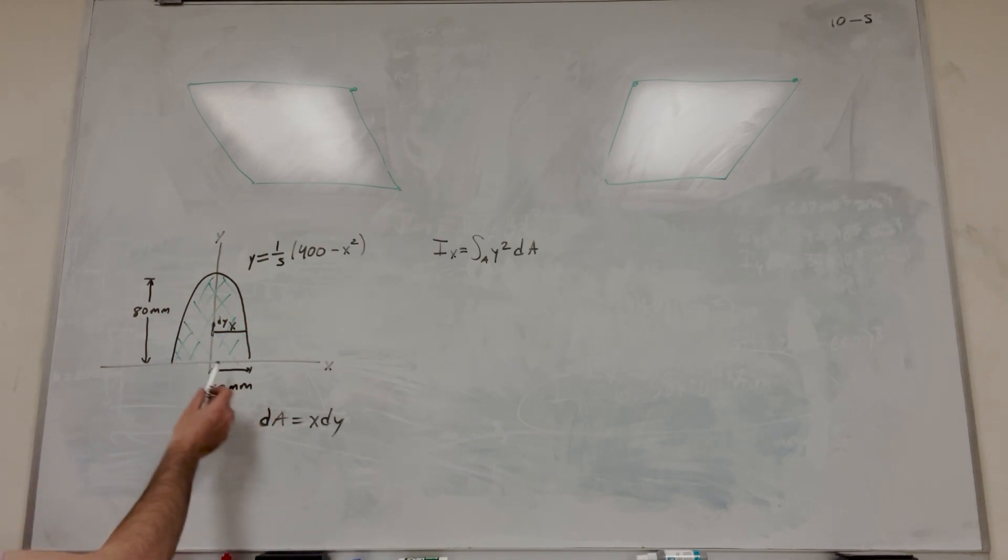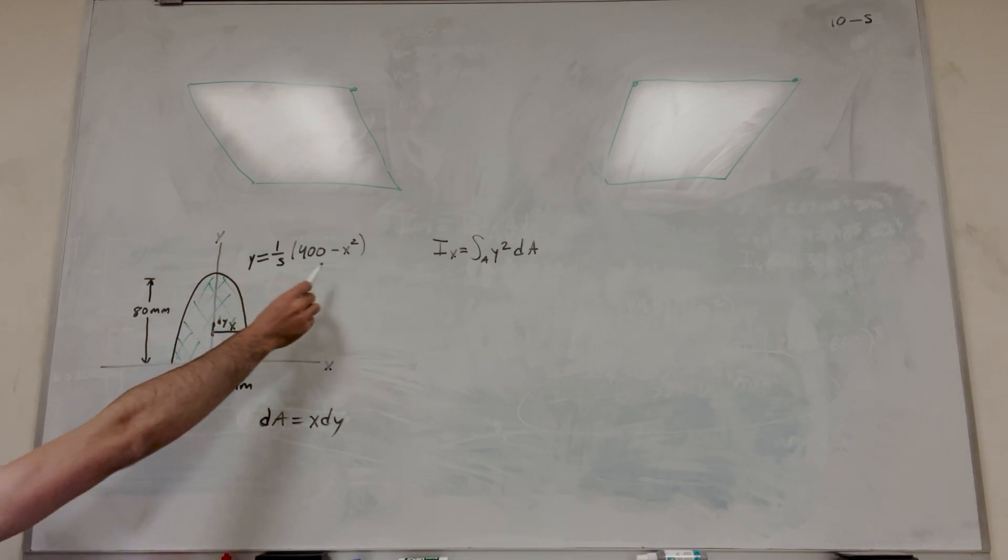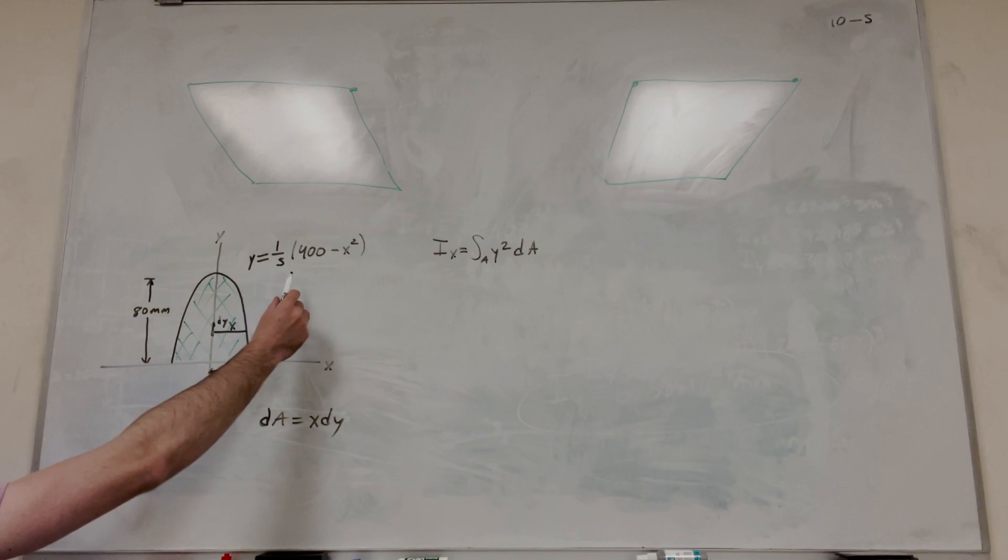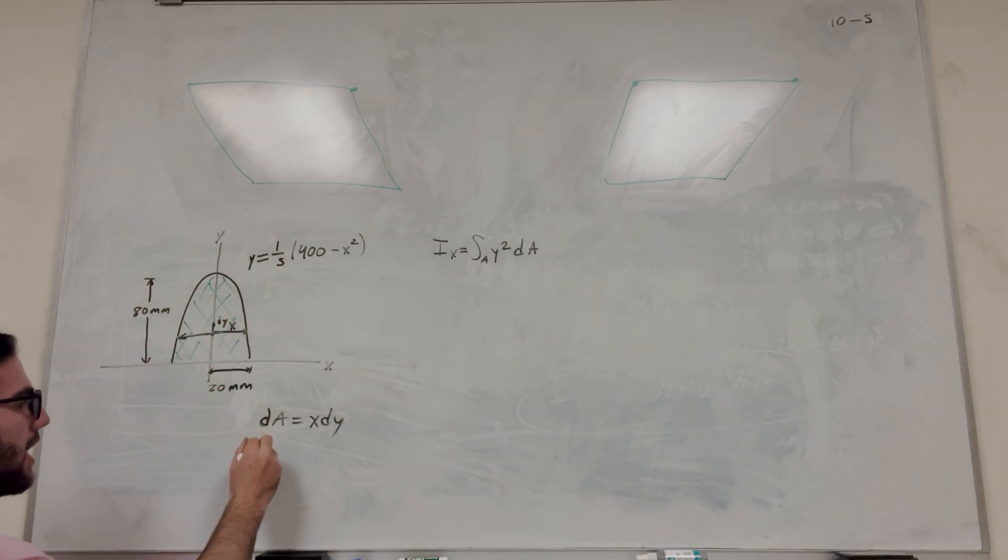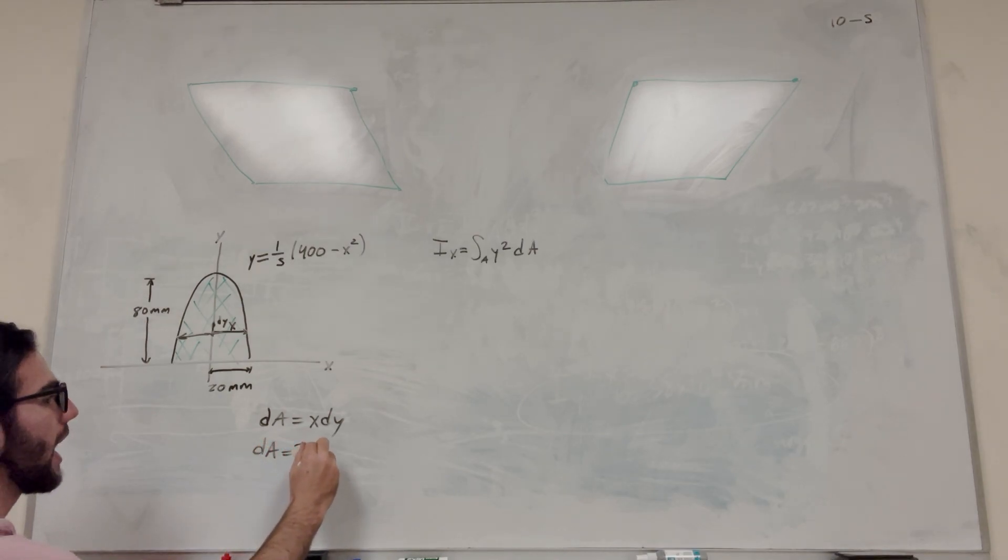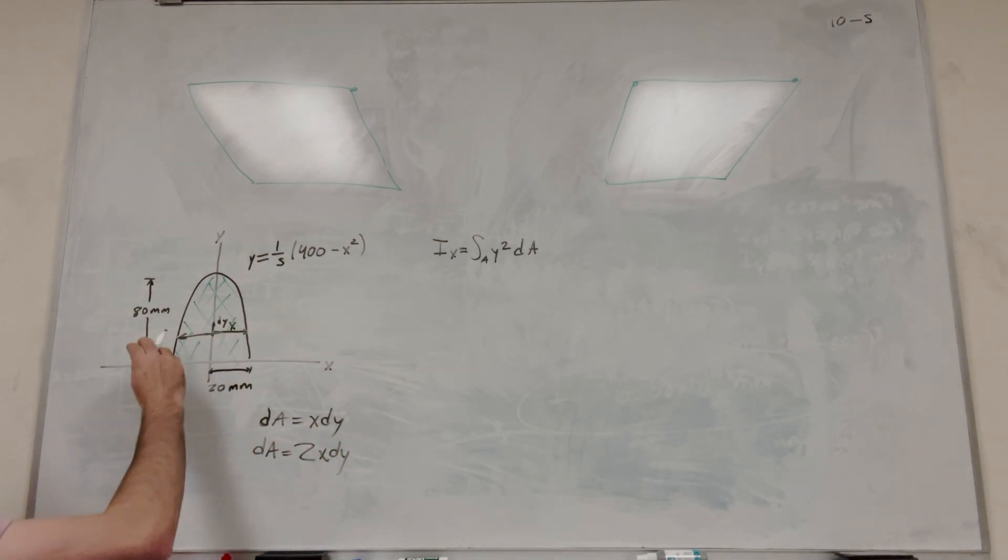So our bounds of the integral are going to go from wherever y starts to wherever y ends, and then x is going to be whatever it is defined by this equation. But we need to make sure because x only goes from the y-axis to the line. But we want to multiply it by 2 to consider that it's on both sides. So this is actually going to be dA equals 2x dy, because it's on both sides.